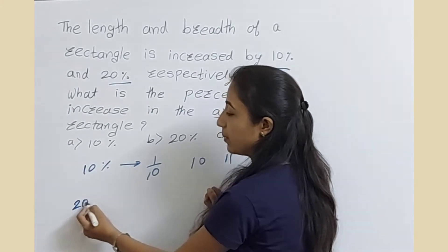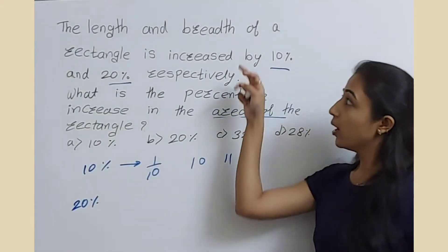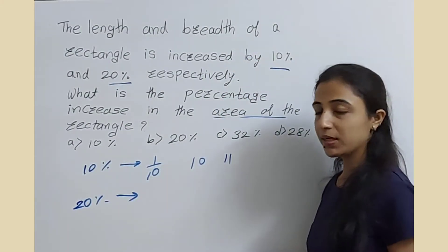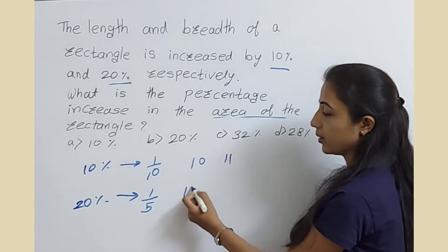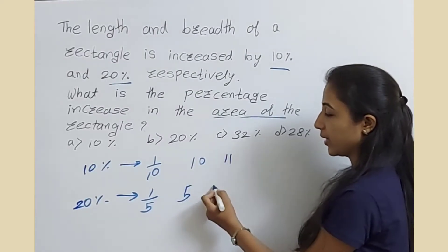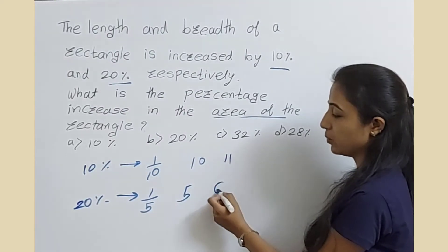Next, the breadth is increased by 20%. We can write 20% as the ratio 1/5. The old breadth is 5, and when increased by 20%, the new breadth is 6.